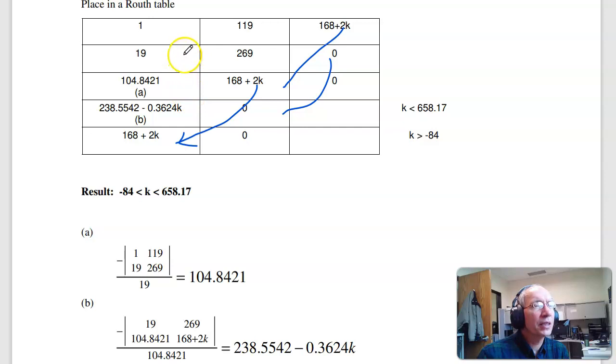Now for stability, there can be no sign flips in the first column. So positive, positive, positive, this has to be positive, k is less than 658. This has to be positive, k is greater than minus 84.